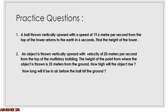Second question: an object is thrown vertically upward with a velocity of 20 m/s from the top of a multi-story building. The height of the point from where the object is thrown is 25 meters from the ground. Find how high the object will rise, and also how long it will be in the air before it hits the ground. Try these questions, and if you have any doubt we will keep the solution. Take care, thank you.